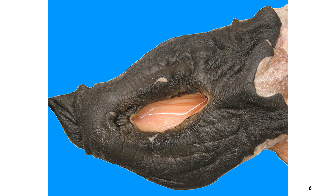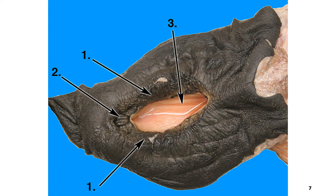This is an image of the Mare Vulva. The structures that can be found in the vulva of the Mare are: number one is the labia — including the labia majora on the outside and the labia minora on the inside. And at the ventral portion, number two is the clitoris.